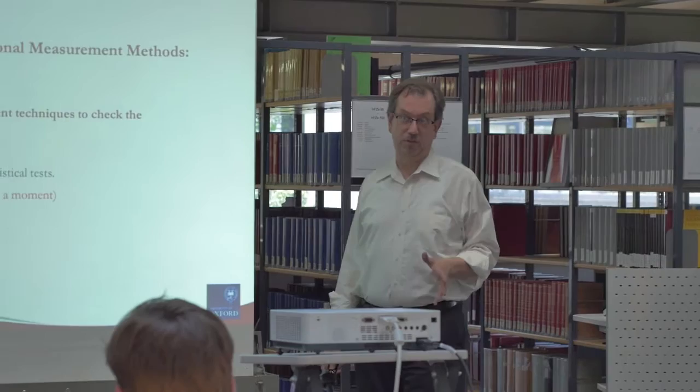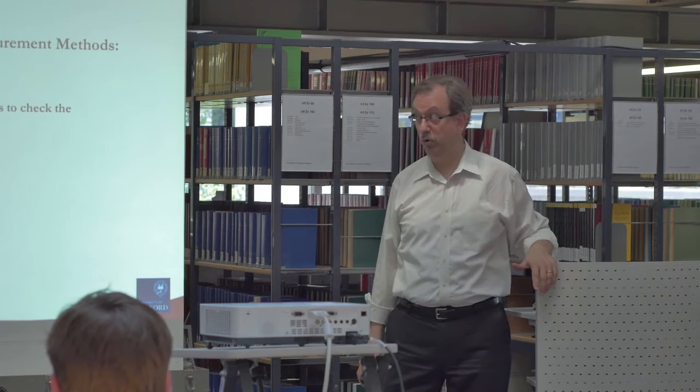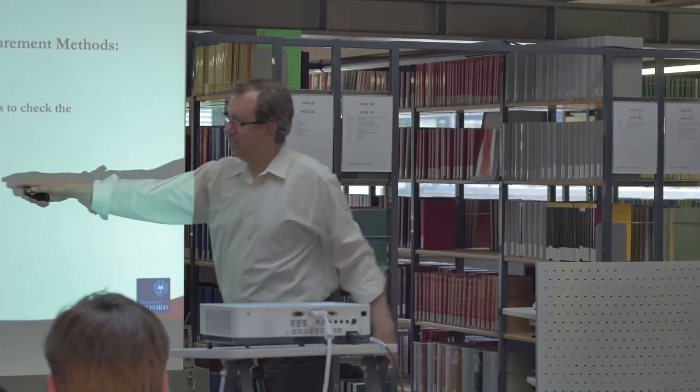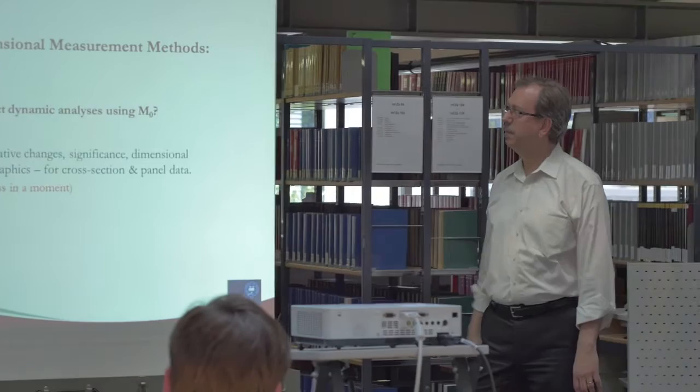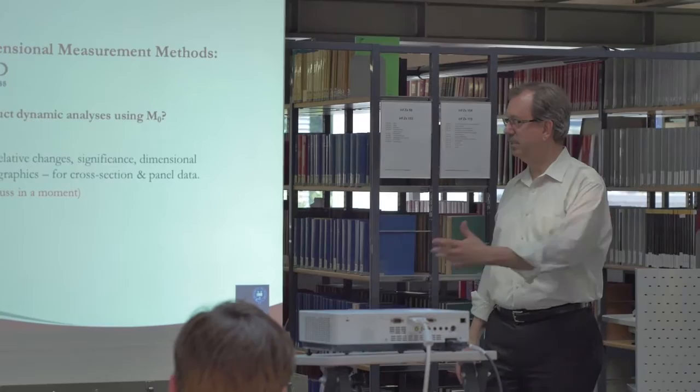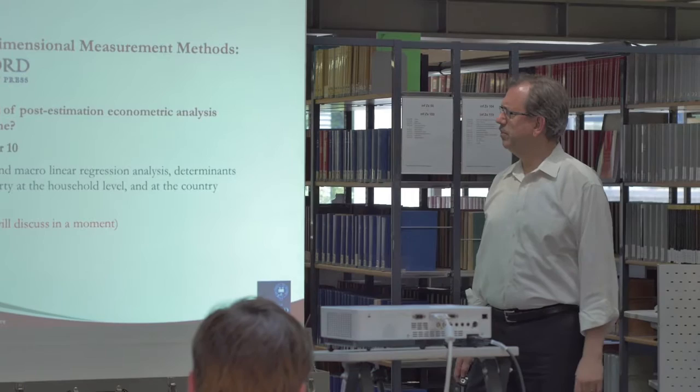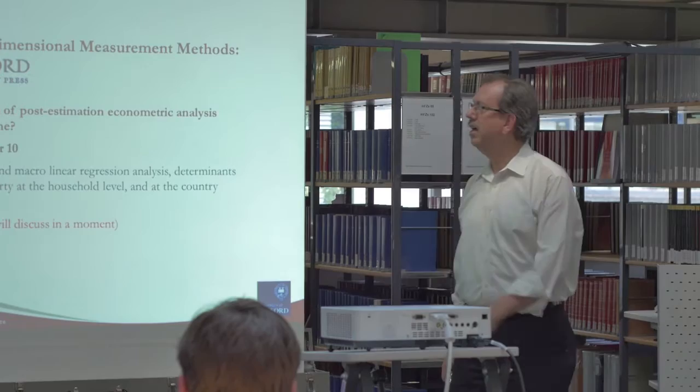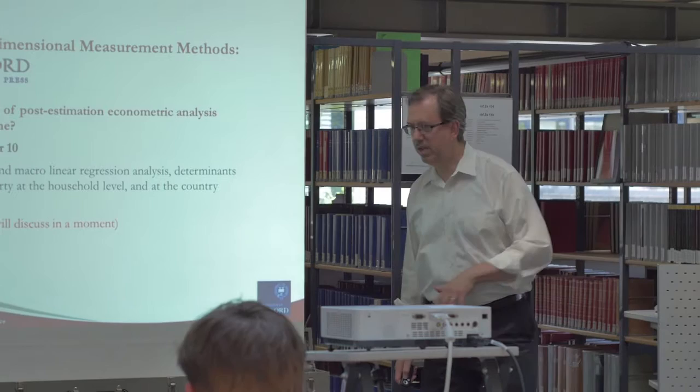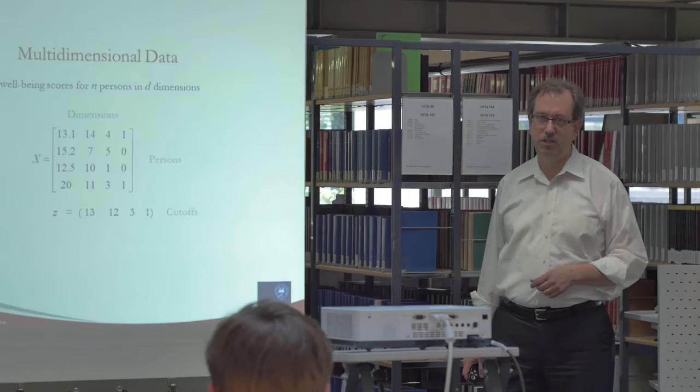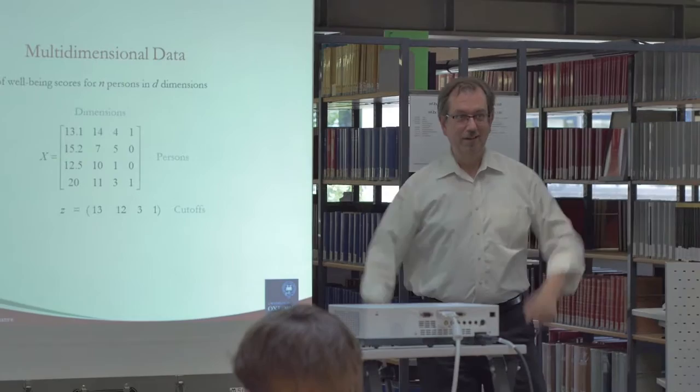Some of the approaches actually draw from law. The variables come right out of the law or the constitution. Some of them are based on development plans that countries have organized. There's all sorts of ways of why a variable or a dimension might be considered legitimate. What are the different techniques to check the robustness of M0? We have to be sure that as we change things a little bit, we aren't really getting totally different results. There are dominance tests and statistical tests. Sabina will discuss this. How to conduct dynamic analyses using M0? Absolute and relative change, significance, dimensional changes, demographics. What kind of post-estimation econometric analyses can be done? Chapter 10 is where the major discussion is located. Macro and micro linear regression models.